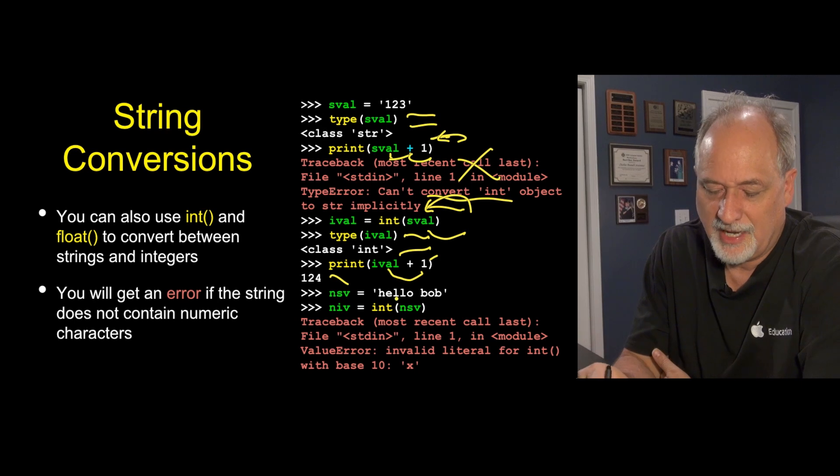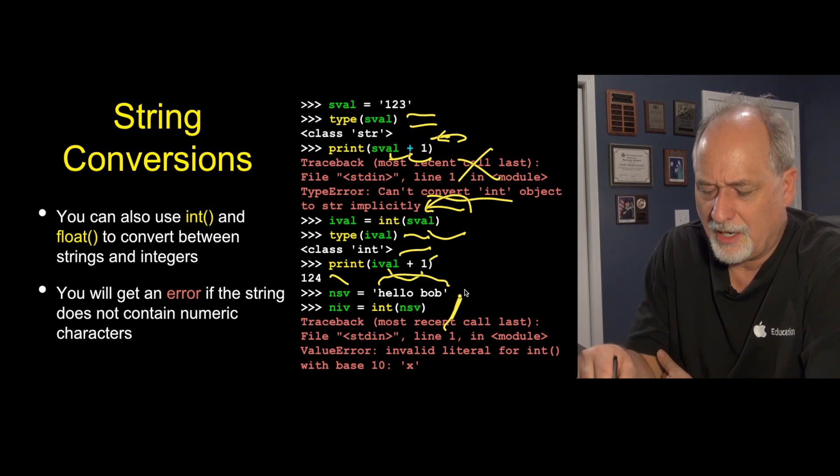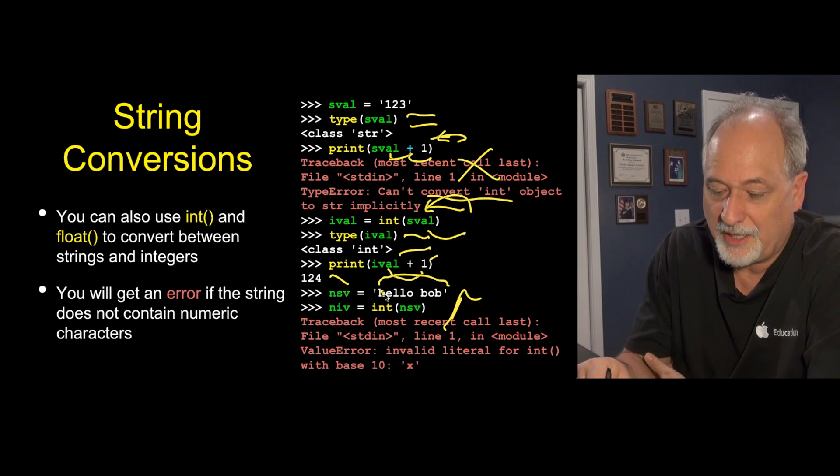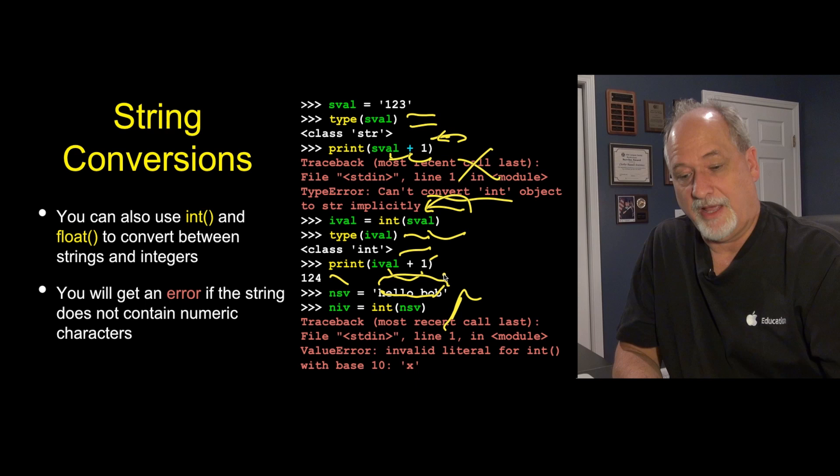Now, int is not magic. If you send something into it, a string that doesn't consist of digits, then you're going to end up with another error. Invalid literal for integer with base 10. It's really complaining. It says I want these to be numbers here, and you just gave me letters. So that's going to cause this to fail.